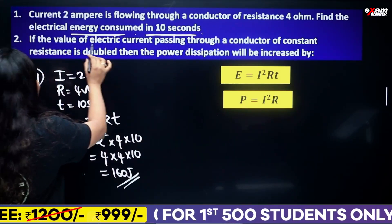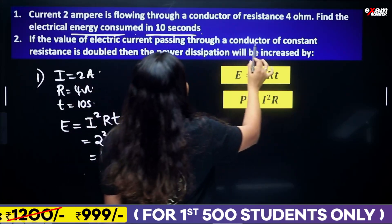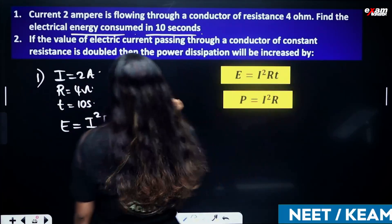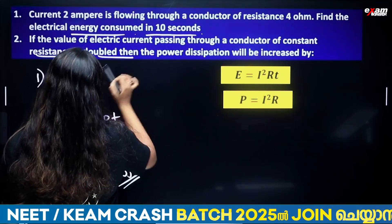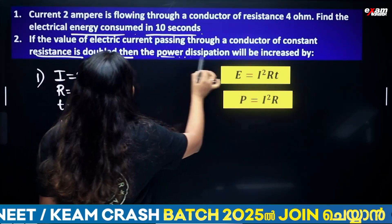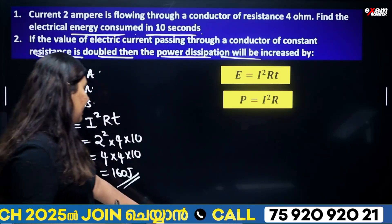If the value of electric current passing through a conductor of constant resistance is doubled, the power dissipation will increase by 4 times, since power is proportional to I².